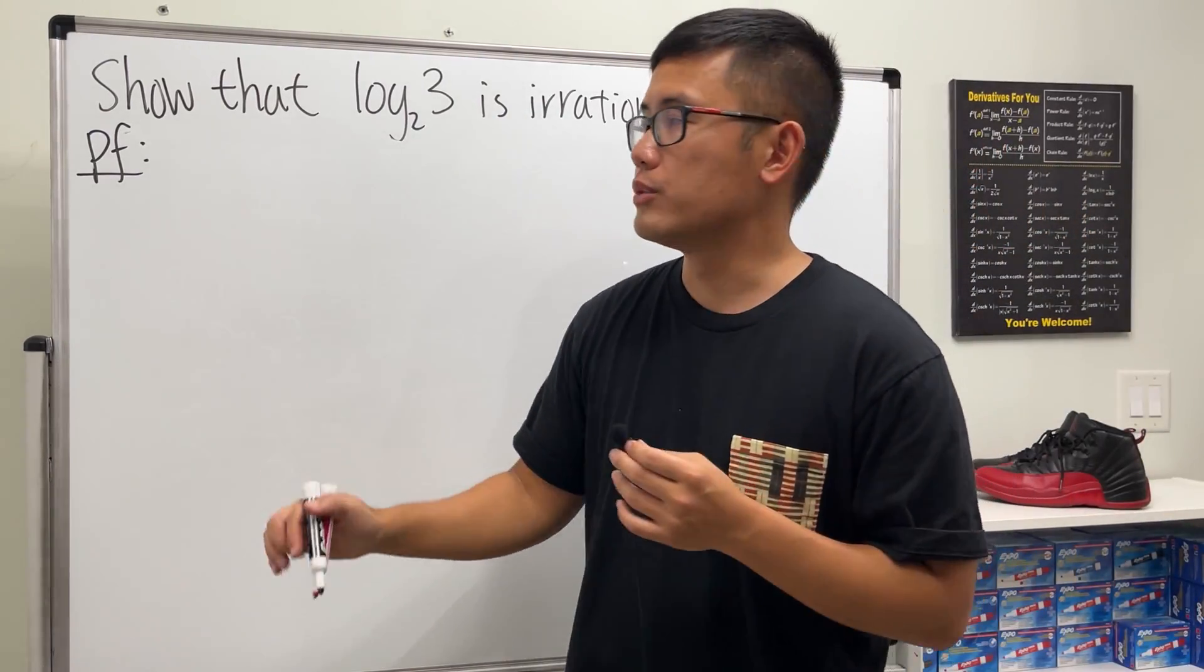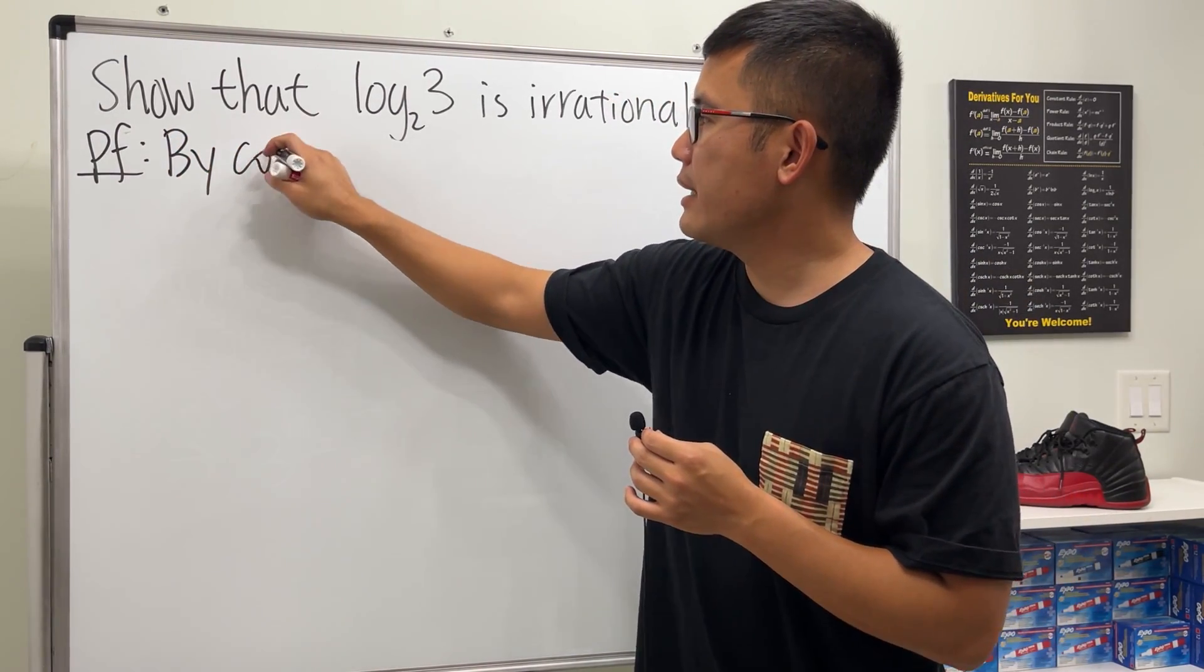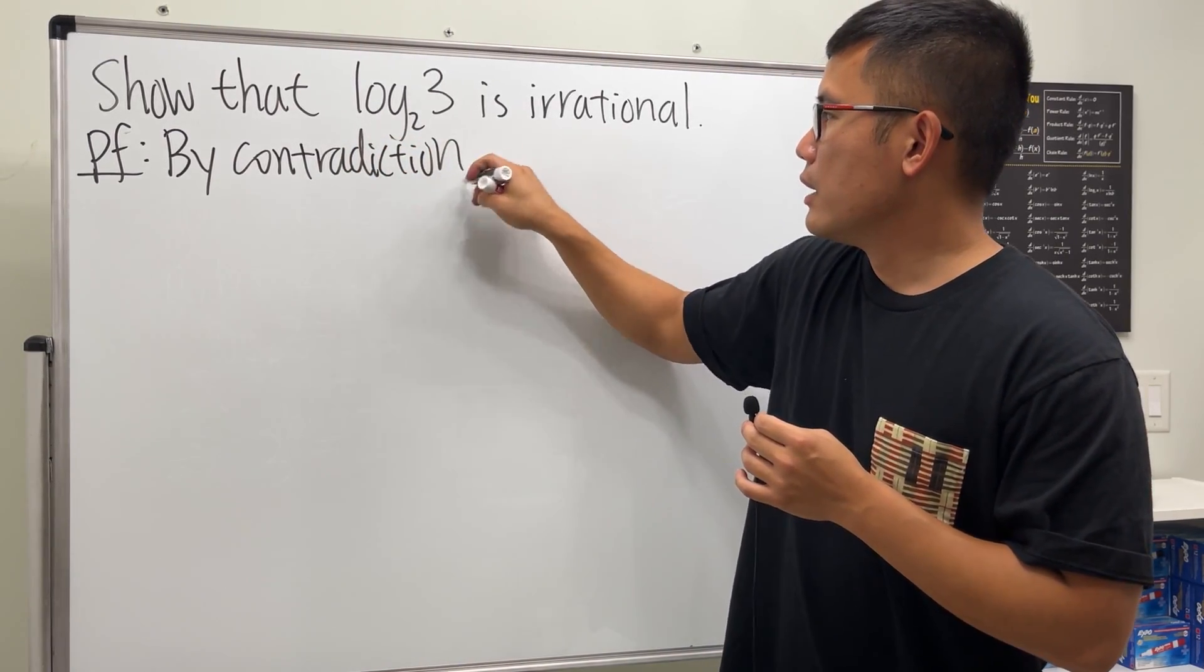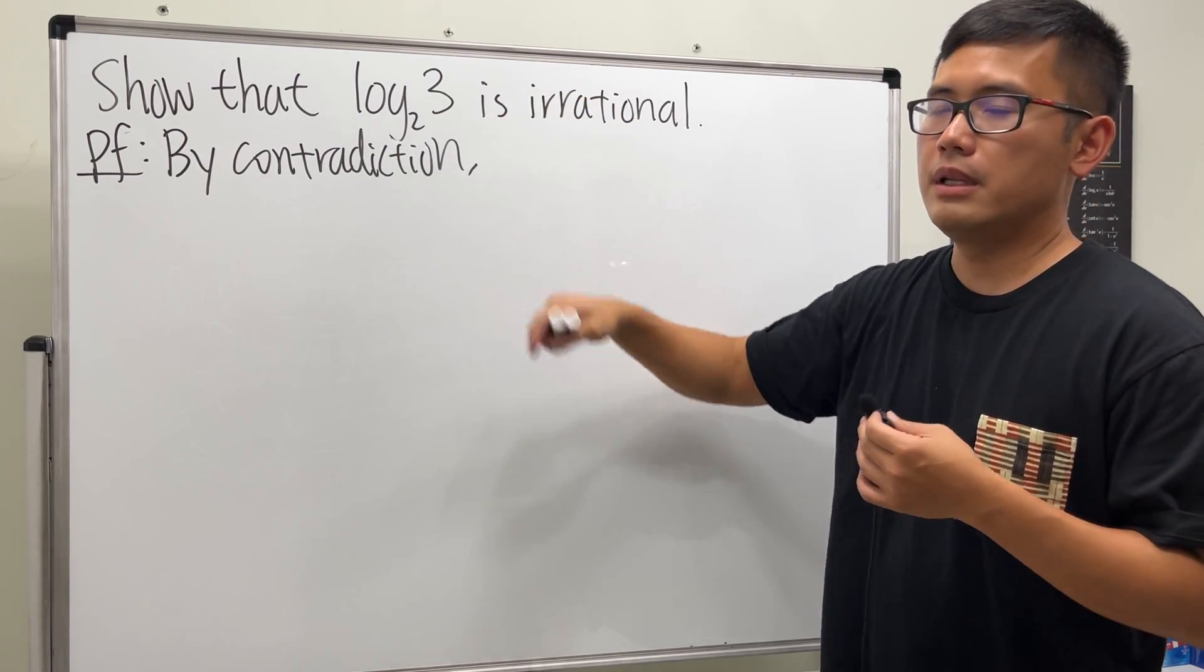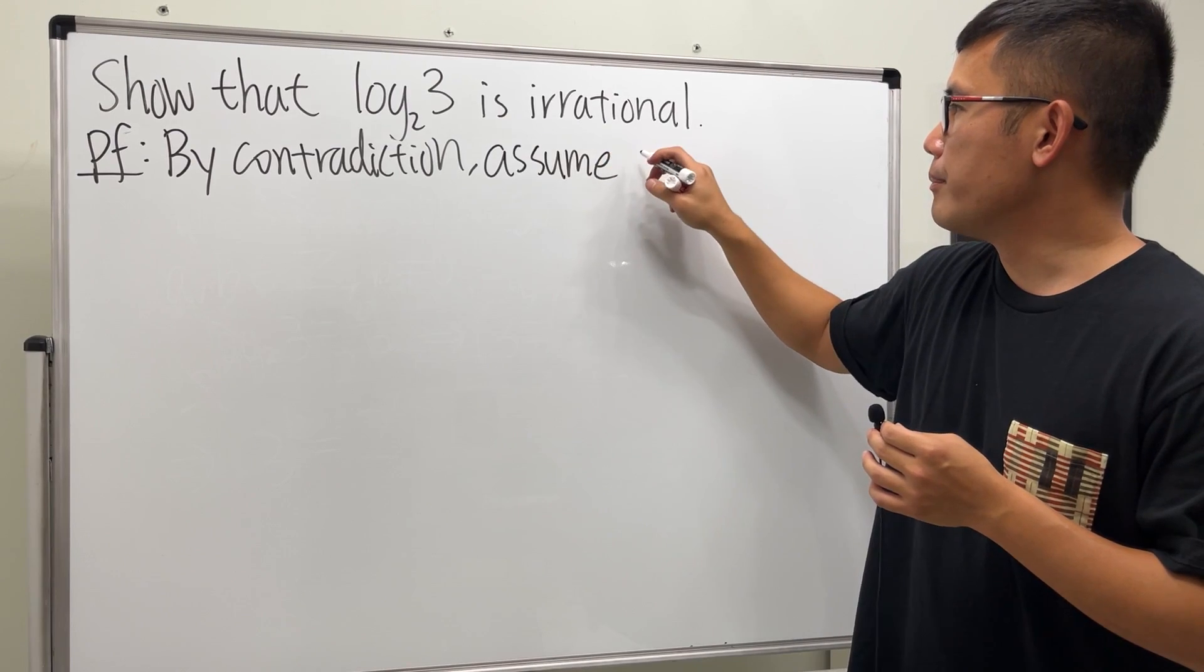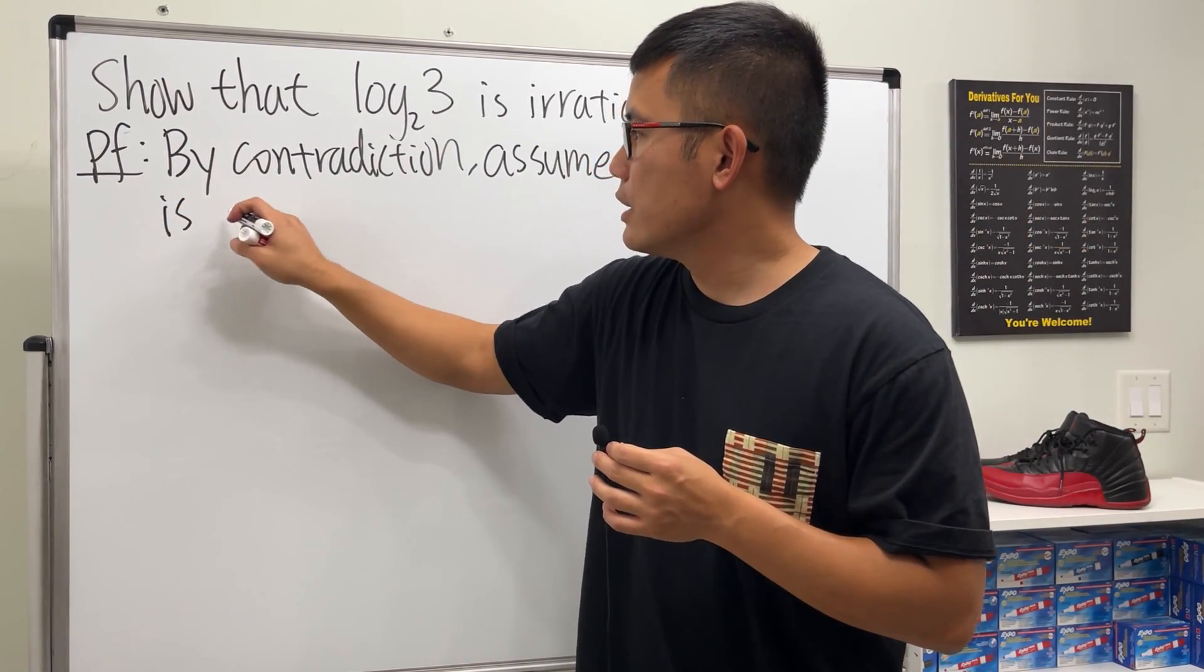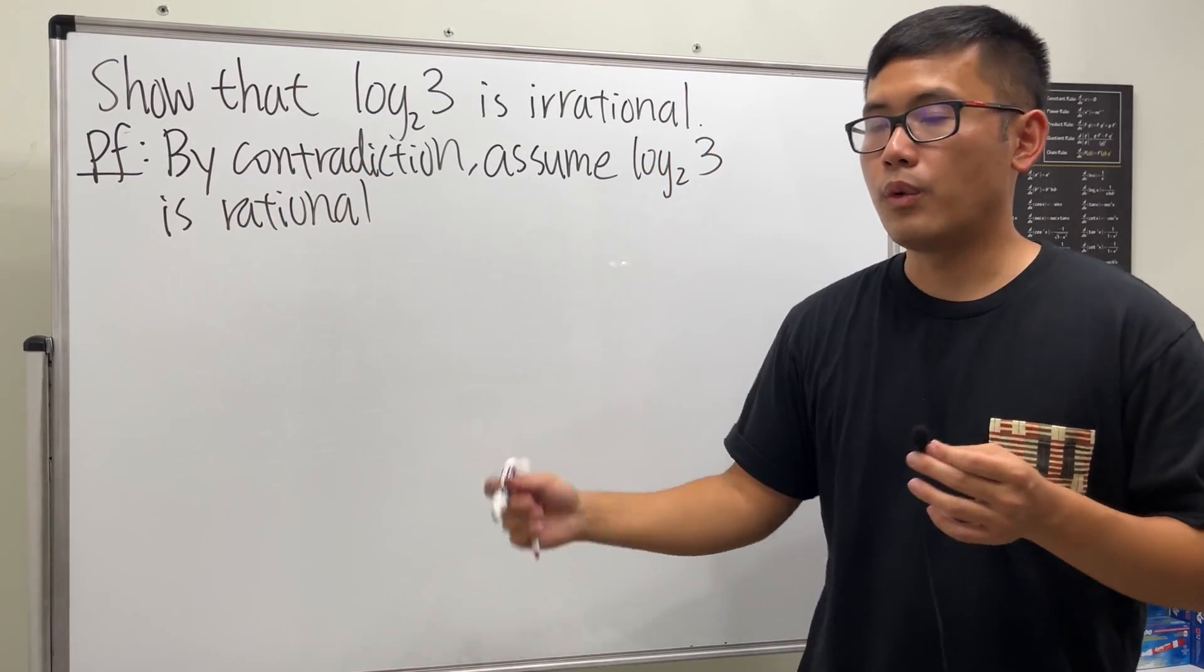All right, so let's go ahead and write down 'by contradiction' so that we can be super clear. What that means is that we're just going to assume the opposite of this statement and see what happens, meaning that we're just going to assume the number log base 2 of 3 is rational for now, and let's see what will happen.